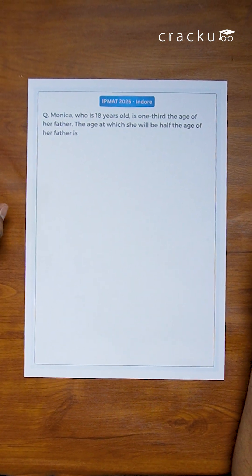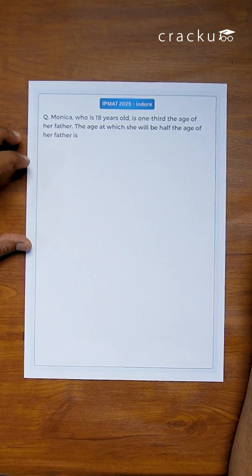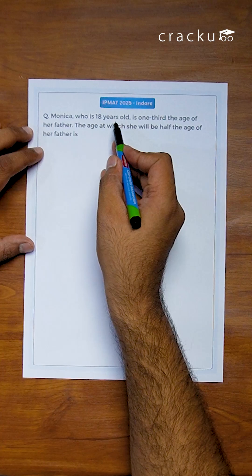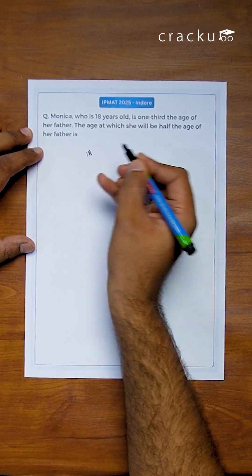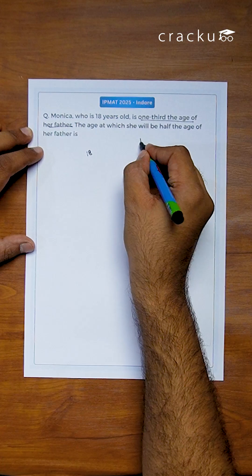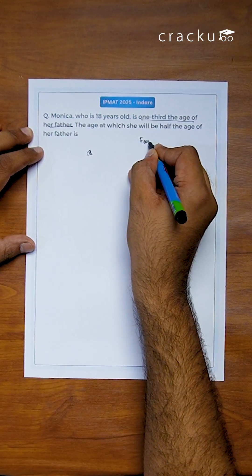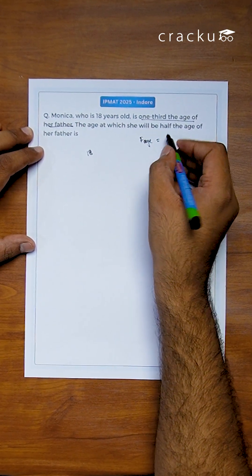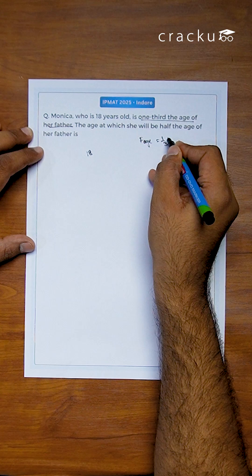Hello friends, let us solve this IPMAT 2025 Indore question. Here it is given that Monica, who is 18 years old, so age of Monica is 18, is one third of the age of her father. So what is father's age? One third of father's age is nothing but given to be 18.